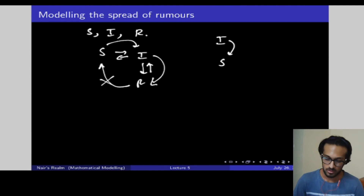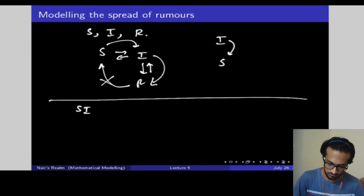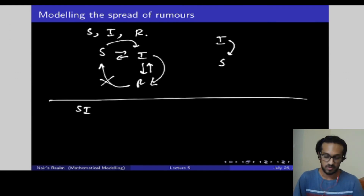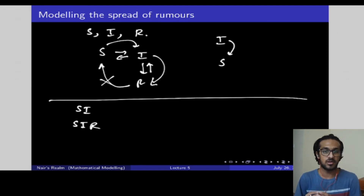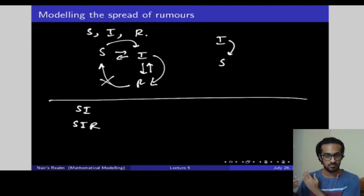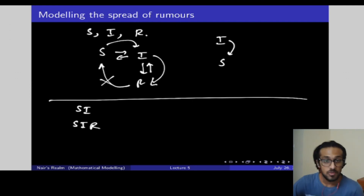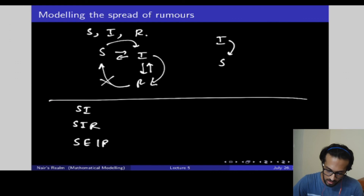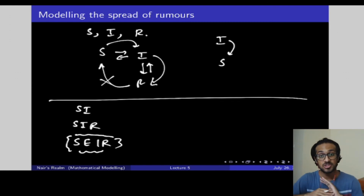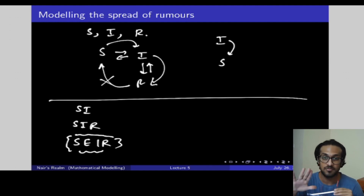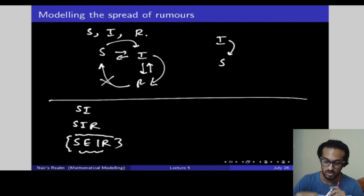Finally, we dealt with the SI model — where somebody gets infected and stays infected forever — and now we've dealt with the SIR model, where some percentage of infected people achieve permanent recovery, detaching themselves from the whole thing. In the next video we're going to deal with something called the SEIR model, and the introduction of this model has changed disease dynamics in an extremely wide way, spawning many new topics and inventions in that field.